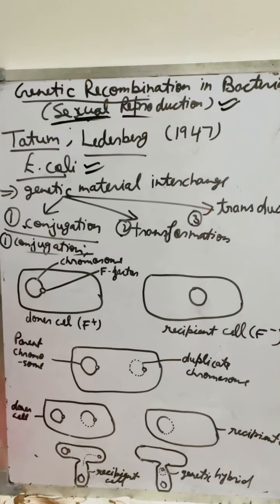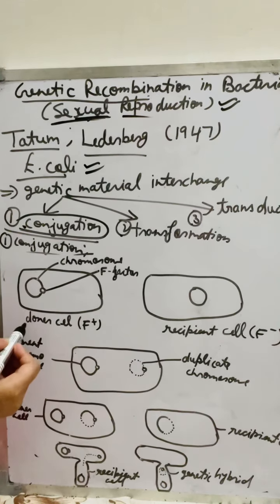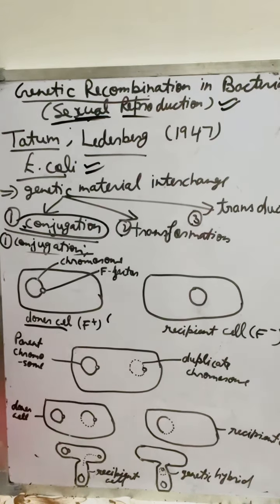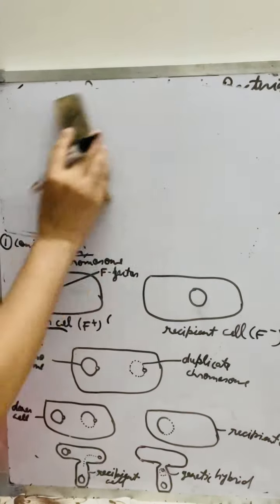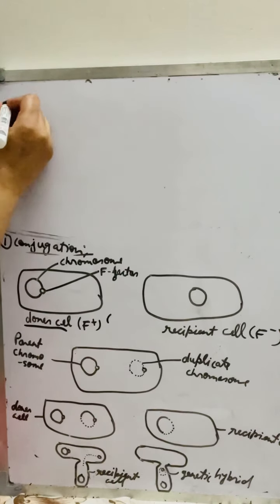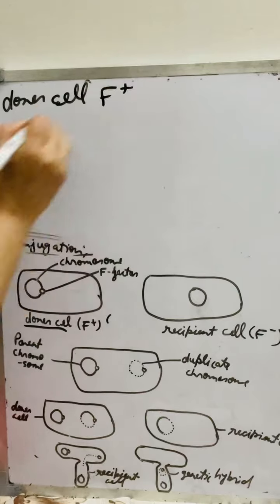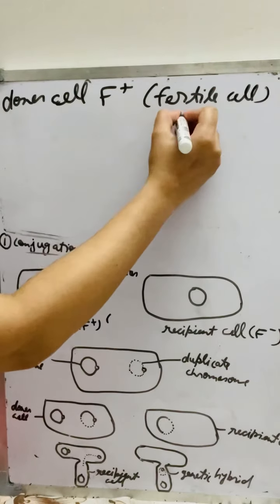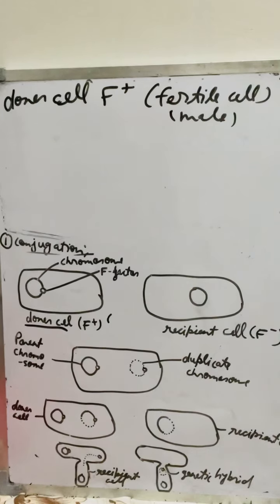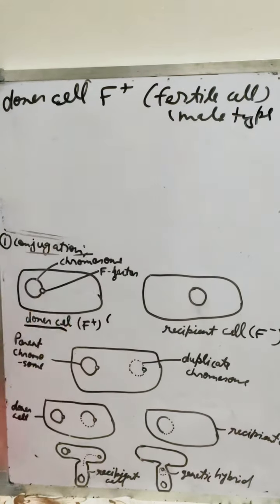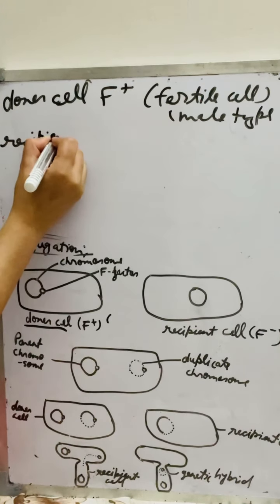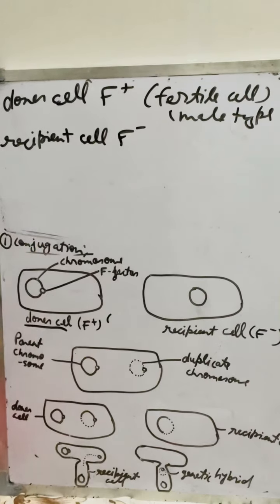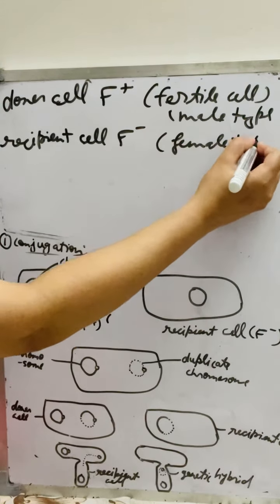In the conjugation process there are two kinds of cells. The first one is the donor cell, which is F-positive and is called the fertile cell or male type. The other is the recipient cell, which is F-negative and is the female type. So you can see there is no sex organ, but there are two different kinds of cells.